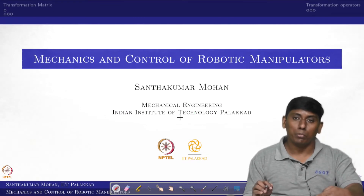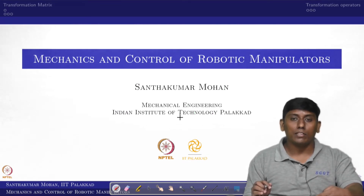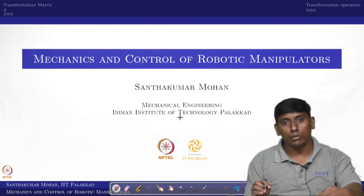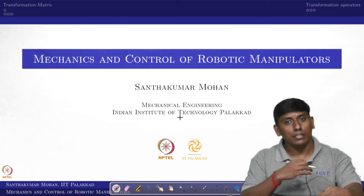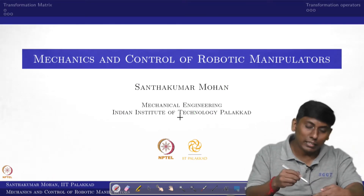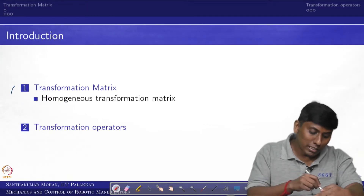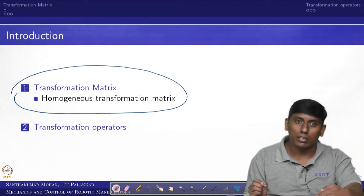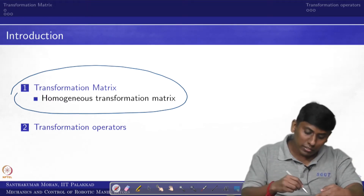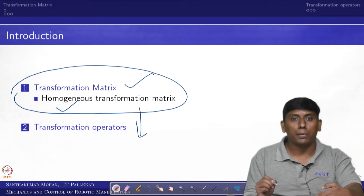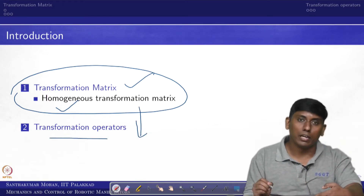Welcome back to Mechanics and Control of Robotic Manipulator. In the last lecture we saw mapping between two different frames, both translated and oriented. We are continuing with one additional aspect called the transformation matrix — why it is called homogeneous and how it can be used as an operator. This is what we are going to see in this particular lecture.